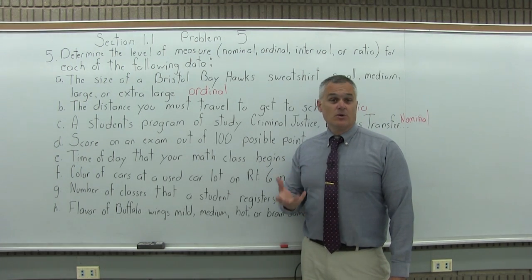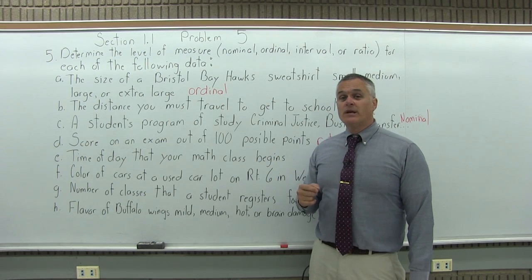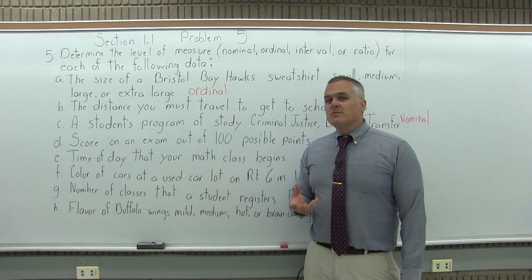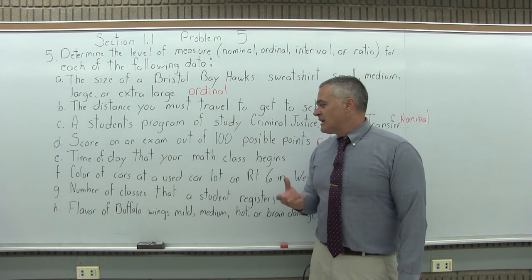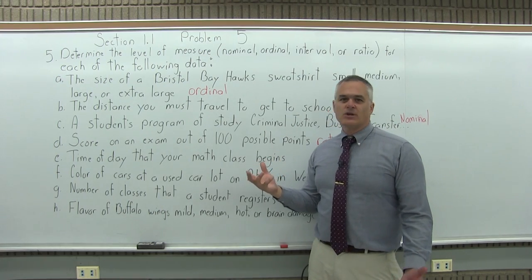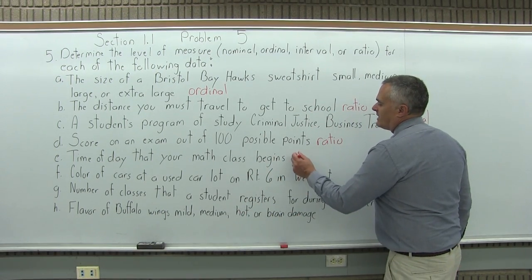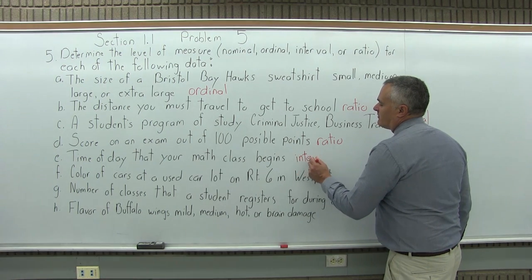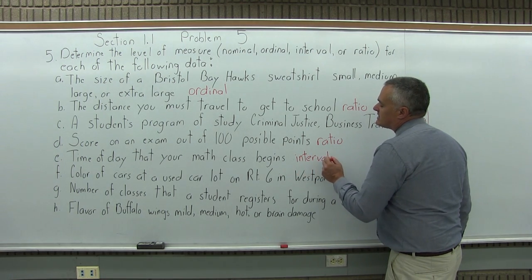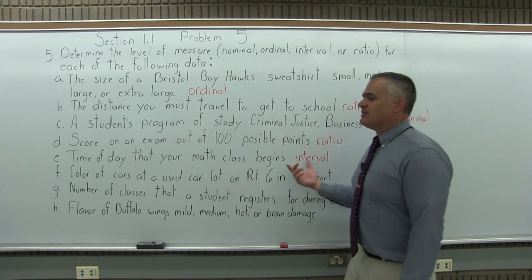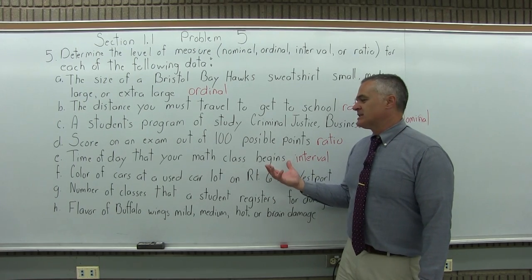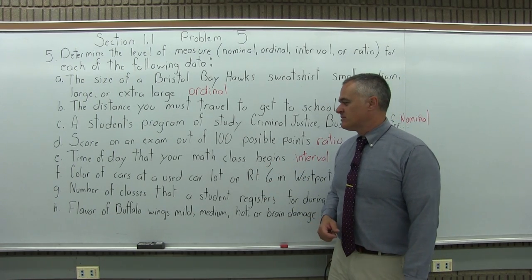So, let's say one student has a math class that begins at one o'clock and another student has a math class that begins at two o'clock. Two is twice as big as one, but it doesn't seem to measure twice as much of anything. Is one class twice as early or twice as late or twice as much anything? Well, no. So what you have here is interval level of measure. So you're using numbers that do not have a sensible ratio. As a number gets twice as big, you're not really getting twice as much of anything.